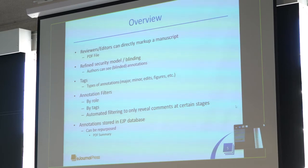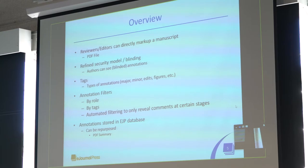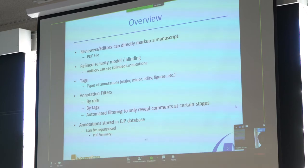As we started making annotations, we got feedback from the American Geophysical Union — it would be nice to tag these annotations: whether they're major or minor concerns, just small edits, or related to figures. And as you go through and start using the Hypothesis tool, there start to be a lot of annotations, so it would be nice to have a filtering system where you say: show me only the major concerns, only the concerns regarding figures, or only Reviewer One's comments.